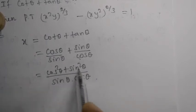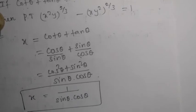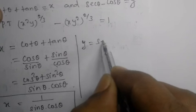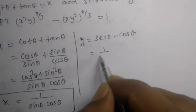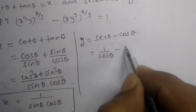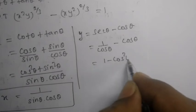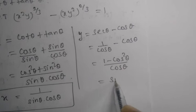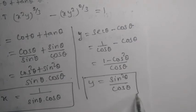So x simplifies to cos theta divided by sin theta plus sin theta divided by cos theta, which gives cos squared theta plus sin squared theta, all divided by sin theta into cos theta. That equals 1 divided by sin theta into cos theta. That is the x value. For y: y is equal to sec theta minus cos theta, which is 1 divided by cos theta minus cos theta, giving 1 minus cos squared theta divided by cos theta, which equals sin squared theta divided by cos theta.